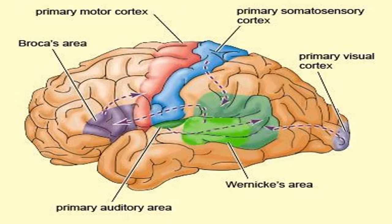This illustration shows the location of these two language areas: Broca's area in the frontal lobe, close to the motor cortex, and Wernicke's area in the upper back temporal lobe, close to both the visual cortex and the auditory area. We think of Broca's area as more related to producing language, like when you write or speak, and Wernicke's area as more related to hearing or reading language.